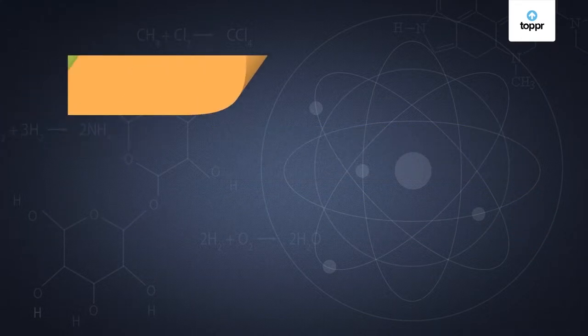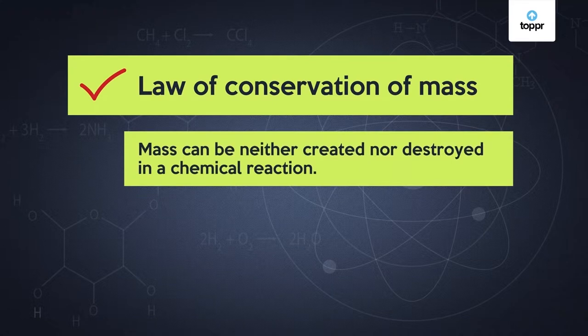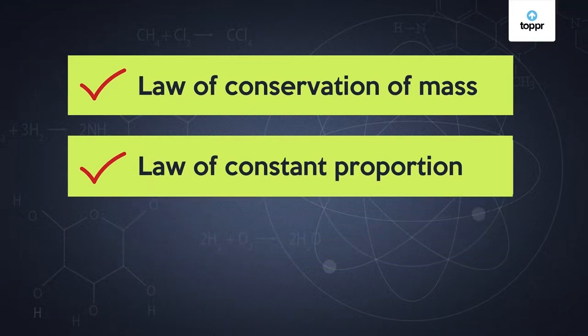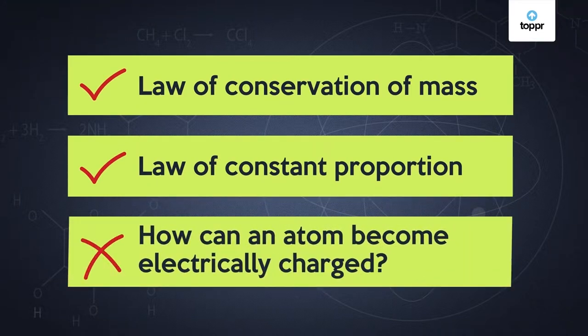You've already learned that Dalton's theory successfully explained the law of conservation of mass and the law of constant proportion. But it failed to explain one thing: How can an atom become electrically charged?